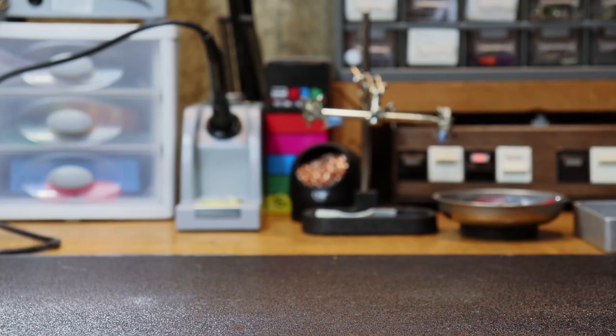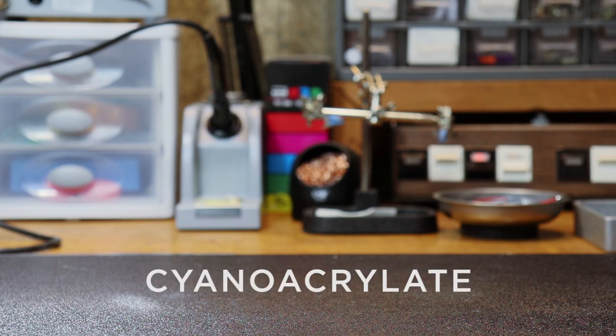What we're going to use to glue this binding back to the guitar body is what's called cyanoacrylate glue, or CA glue for short.